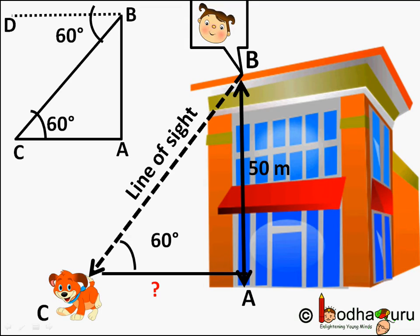Say in this case the angle of depression is 60 degrees, that is angle DBC is 60 degrees. So the angle of elevation ACB is also 60 degrees.